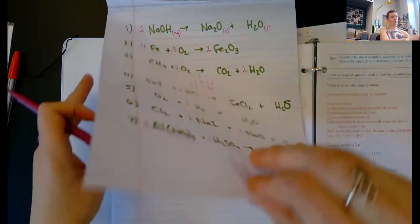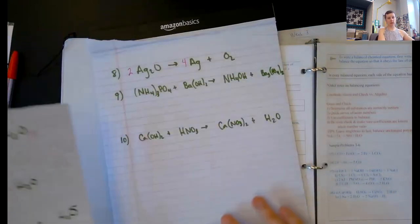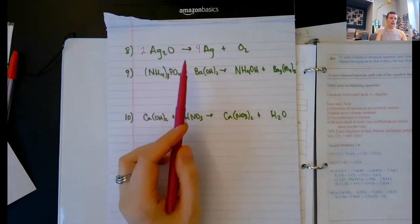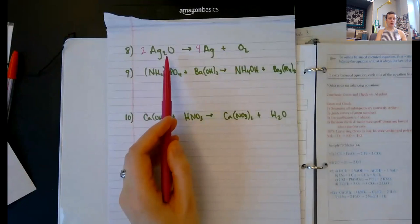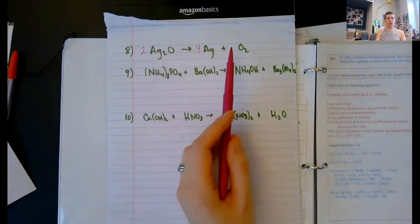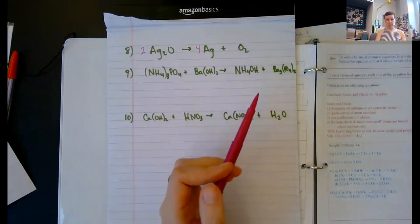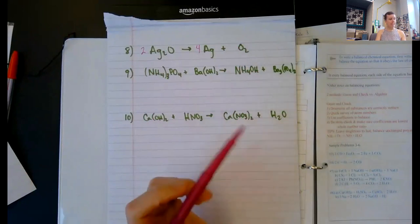Next one. Number eight. Two, four, one. If you have anything different there, might check your ratio. Ag2O is what this compound should be. Also check to make sure that you wrote oxygen as a diatomic element. Because if you forgot that too, then it would be a lot simpler to balance this one.